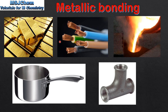Metals are ductile, which means they can be drawn into wires. Copper is used in electrical wires because it's a very good conductor of electricity. Metals such as iron have high melting points. They are also good conductors of heat, which is why they're used to make saucepans.